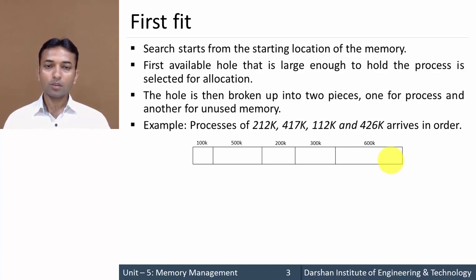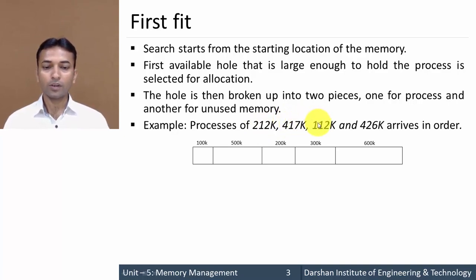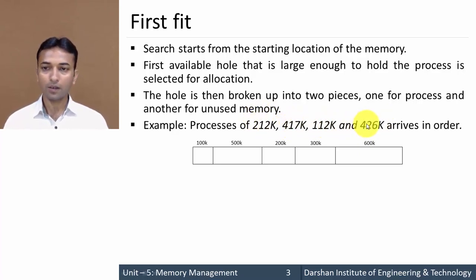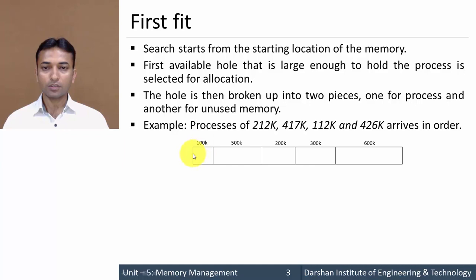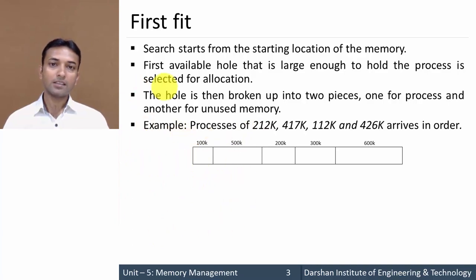Now let us take an example. Suppose there are four processes: Process 1 of 212 KB, Process 2 of 470 KB, Process 3 of 112 KB, and Process 4 of 426 KB. These four processes arrive in this order. For the first process of 212 KB, this algorithm will start from the beginning and find out the first hole that is large enough to hold this process, then that partition is allocated.